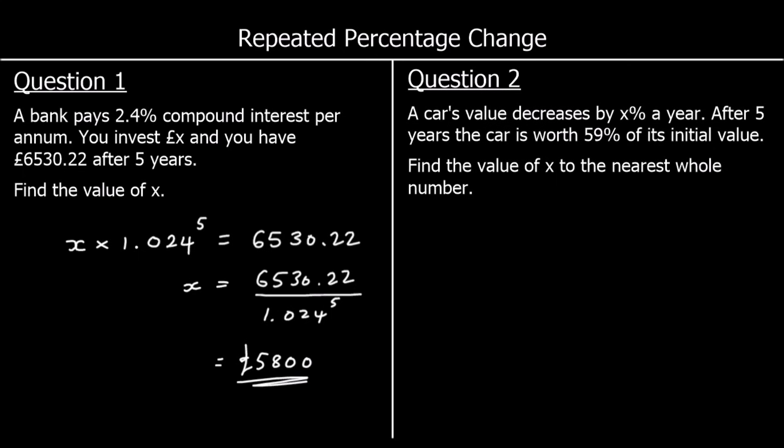Question 2. A car's value decreases by X% a year. After five years the car is worth 59% of its initial value. Find the value of X to the nearest whole number. This time we haven't been given actual values — we don't know how much the car was worth to start with, and we don't know how much it's worth at the end. We just know that the end value is 59% of the original value. We could make numbers up — if it was worth £100 to start with, we multiply by our multiplier to the power of five and get £59.